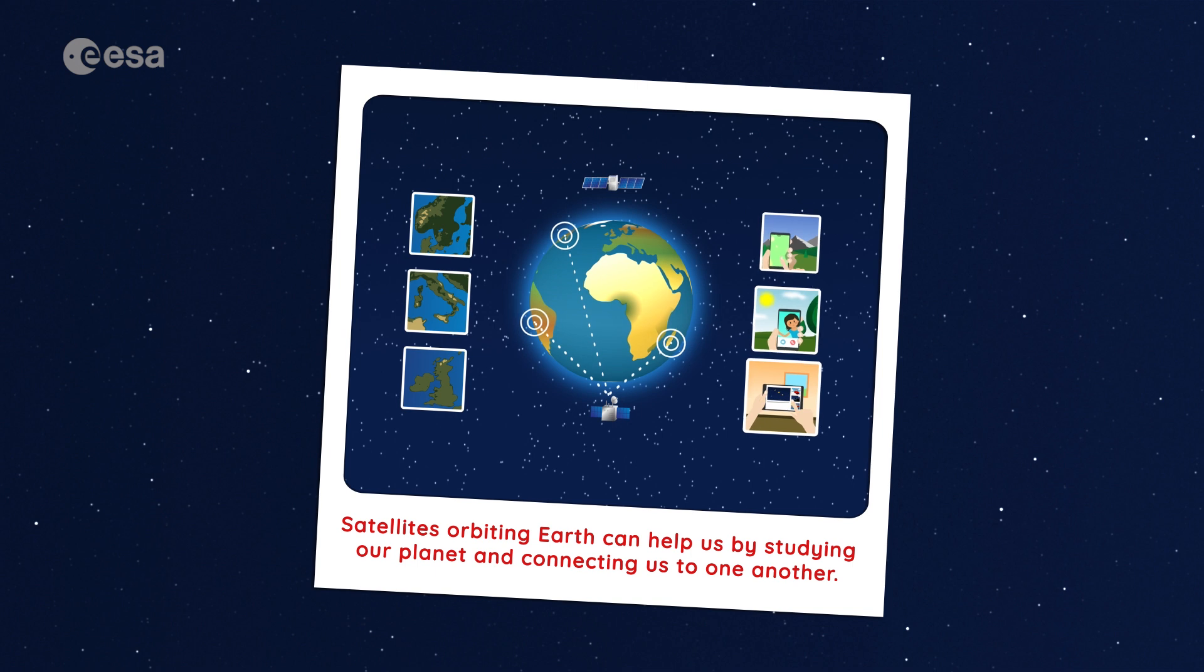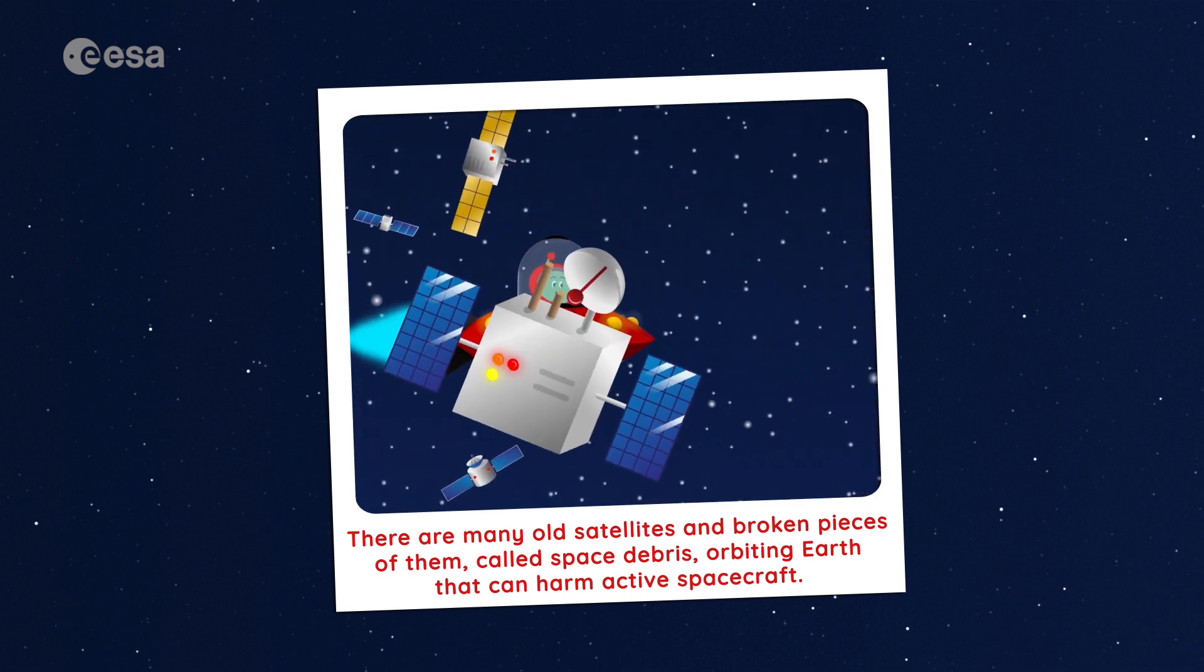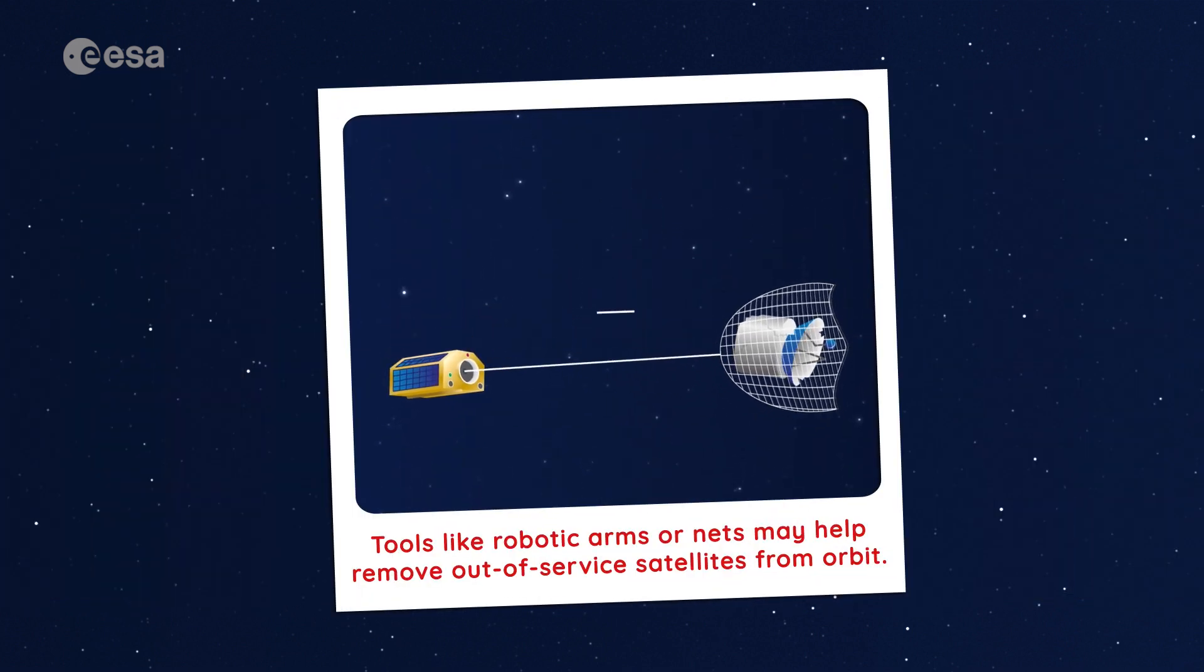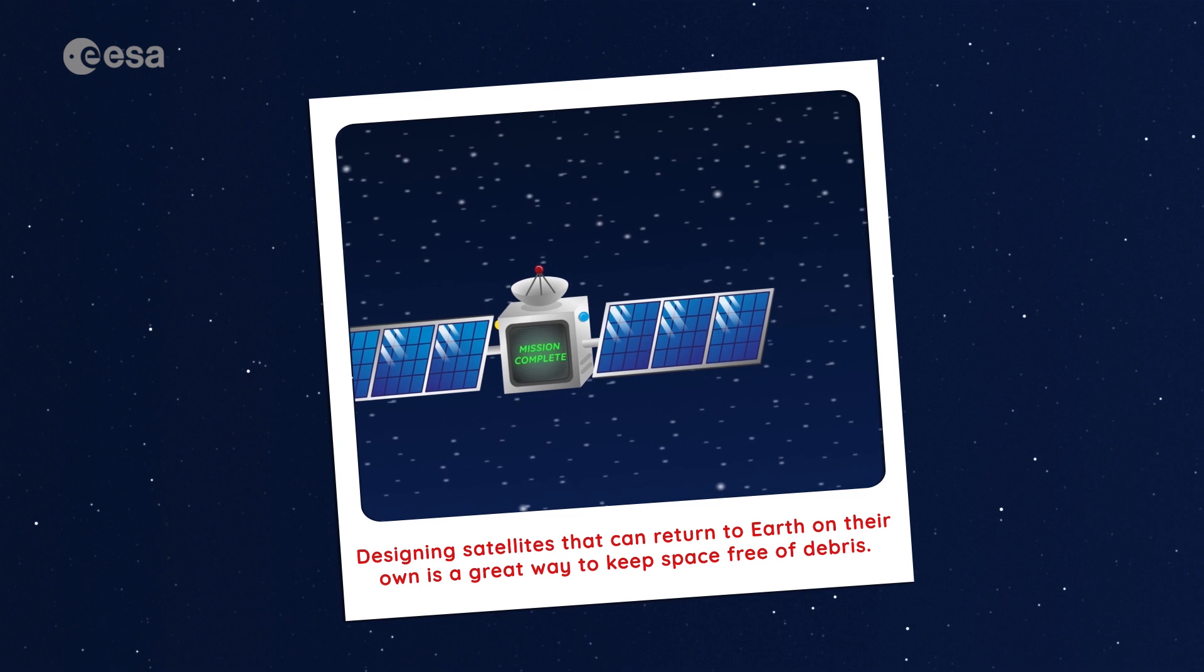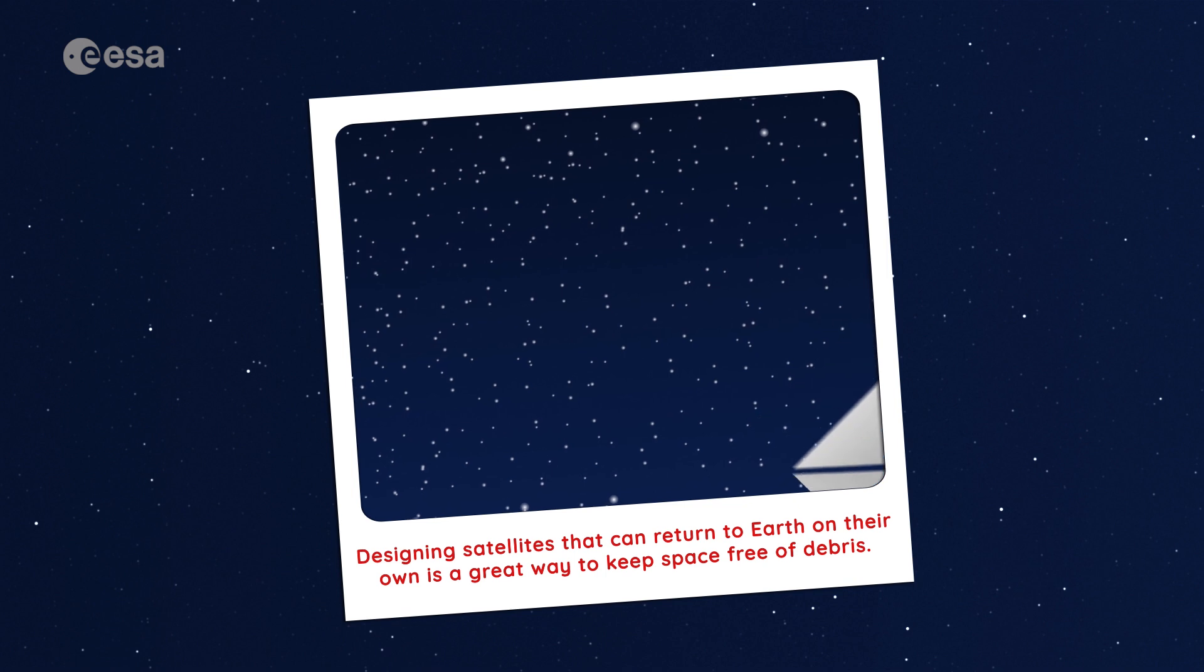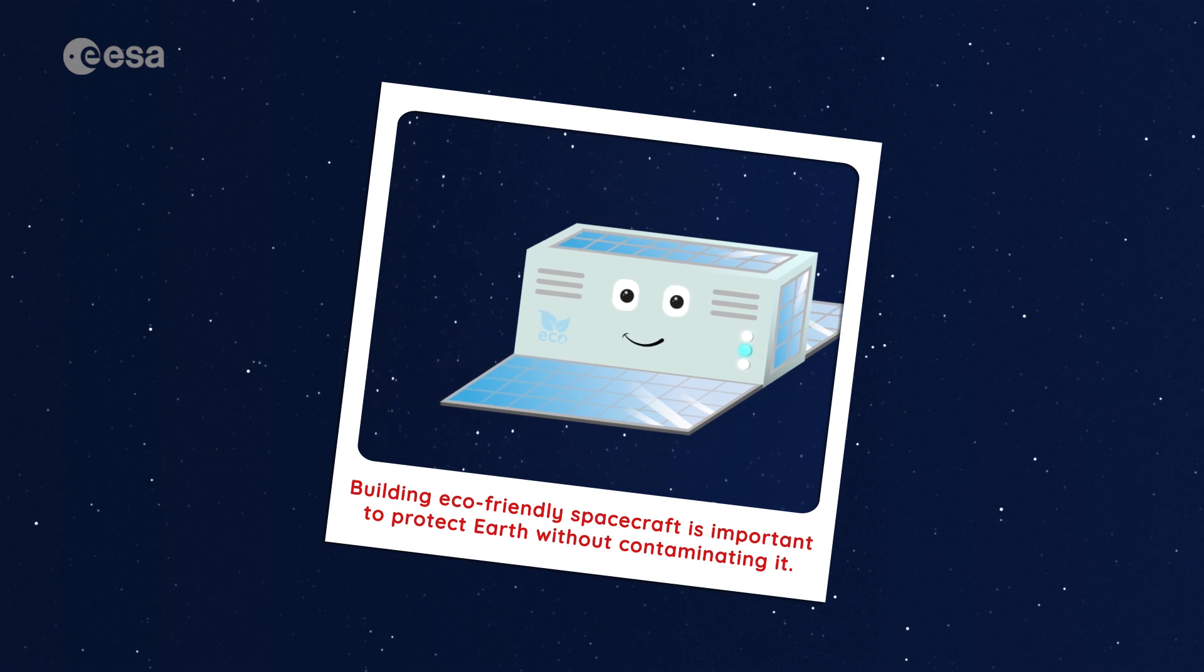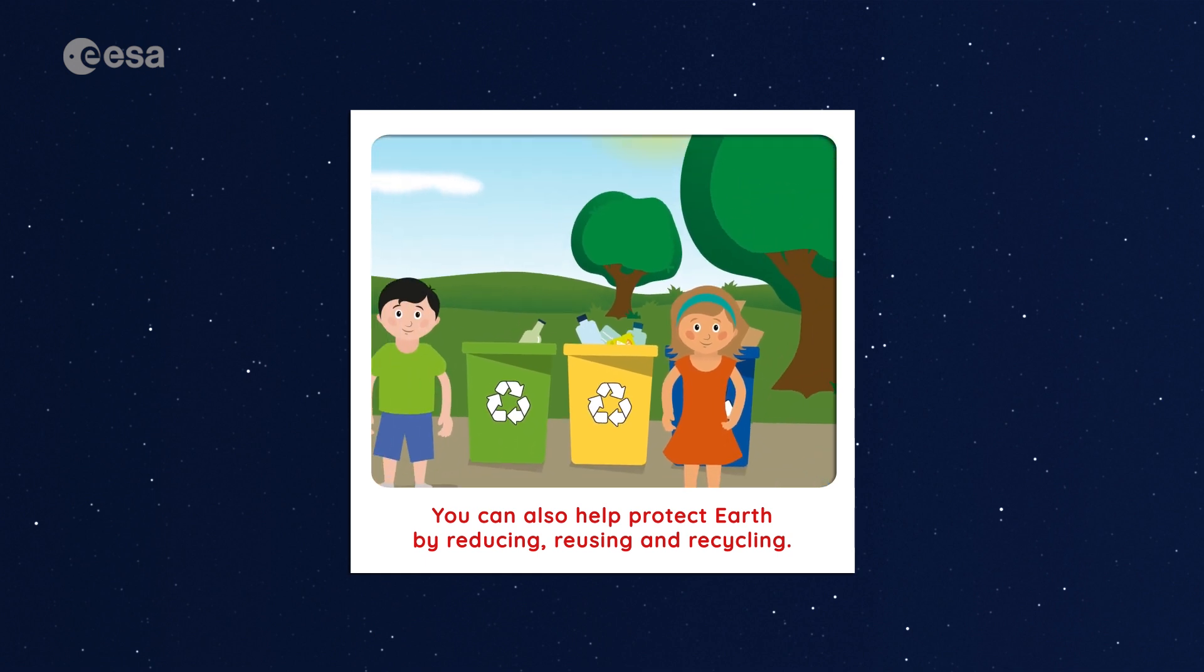Today, we've learned that satellites orbiting Earth can help us by studying our planet and connecting us to one another. There are many old satellites and broken pieces of them called space debris orbiting the Earth that can harm active spacecraft. Tools like robotic arms or nets may help remove out-of-service satellites from orbit. Designing satellites that can return to Earth on their own is a great way to keep space free of debris. Building eco-friendly spacecraft is important to protect Earth without contaminating it. You can also help protect Earth by reducing, reusing and recycling.